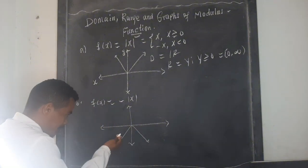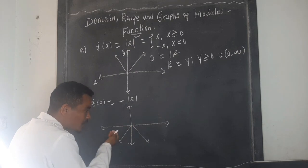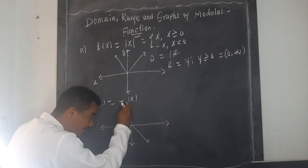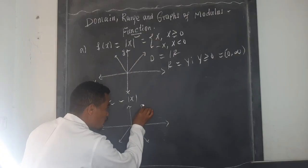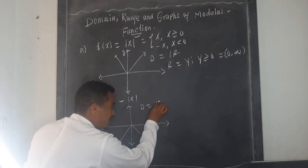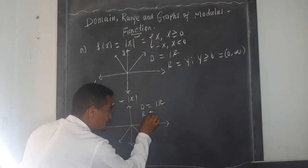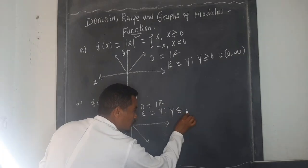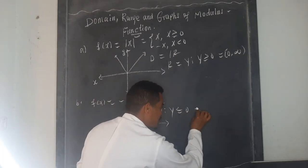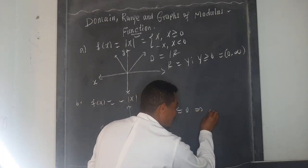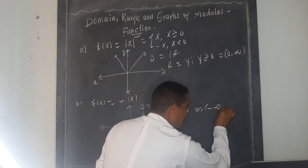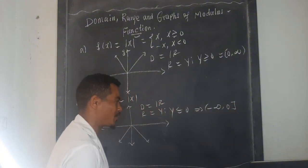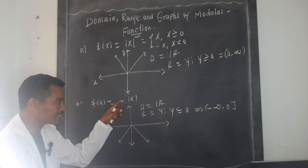That means when the x value is negative or positive, the original y-value output is multiplied by a negative number, so the graph goes down. The domain is any real number. The range is y less than or equal to zero, that is negative infinity to zero.